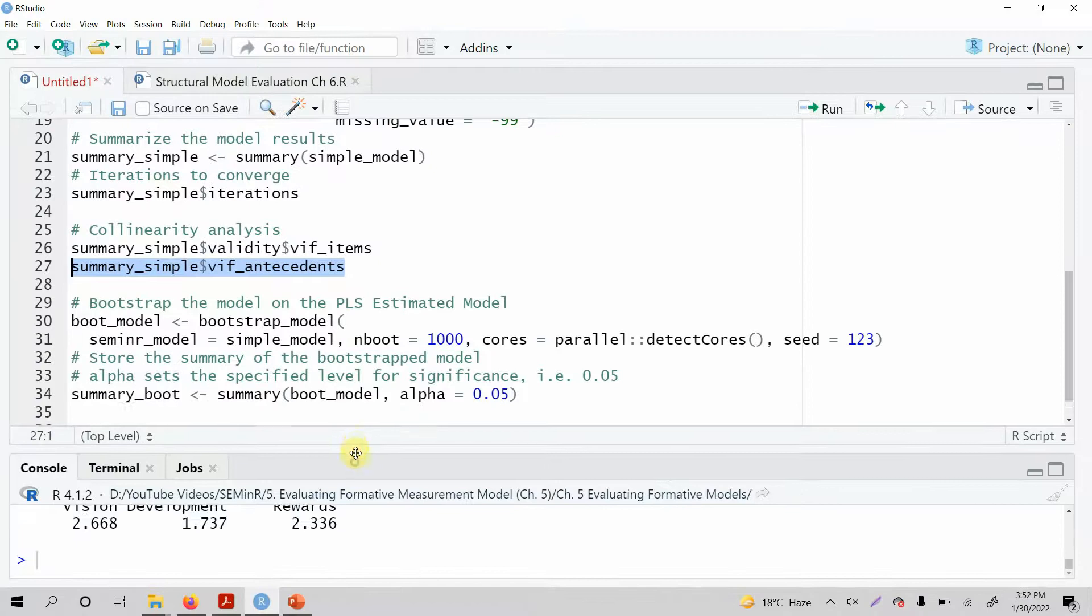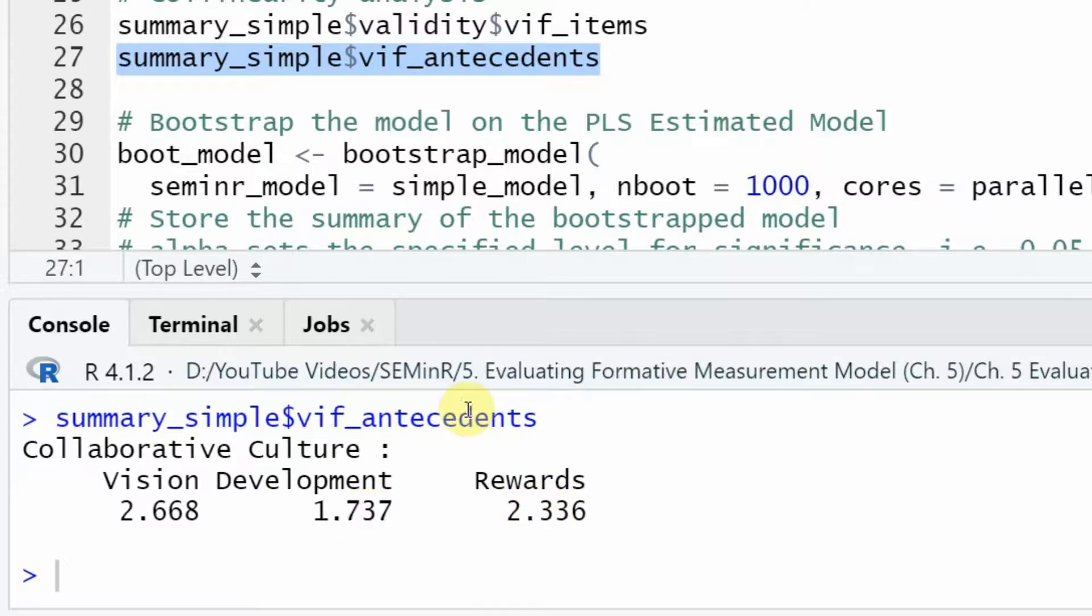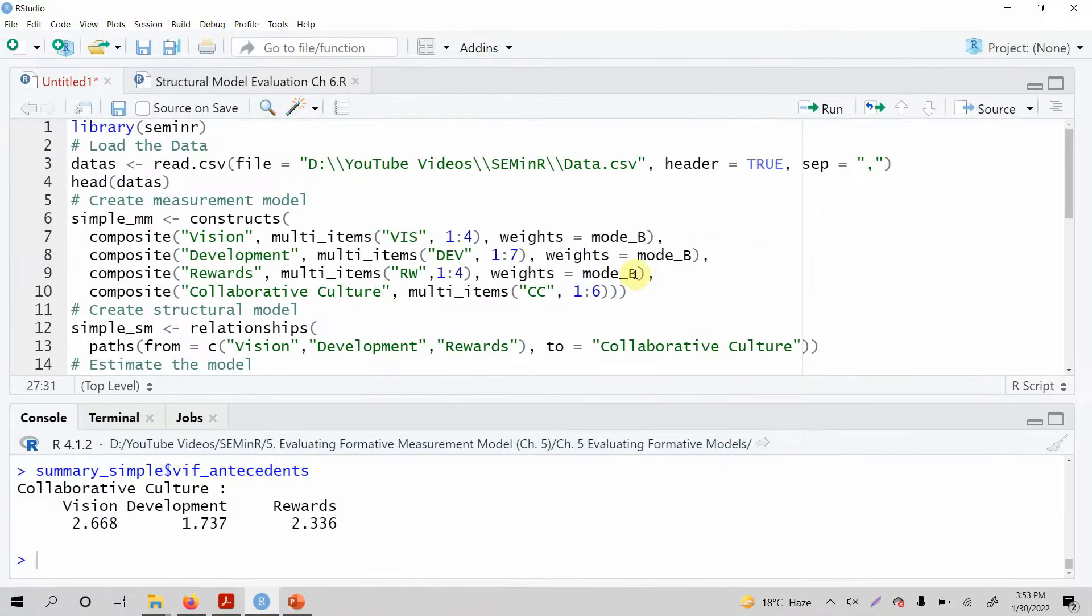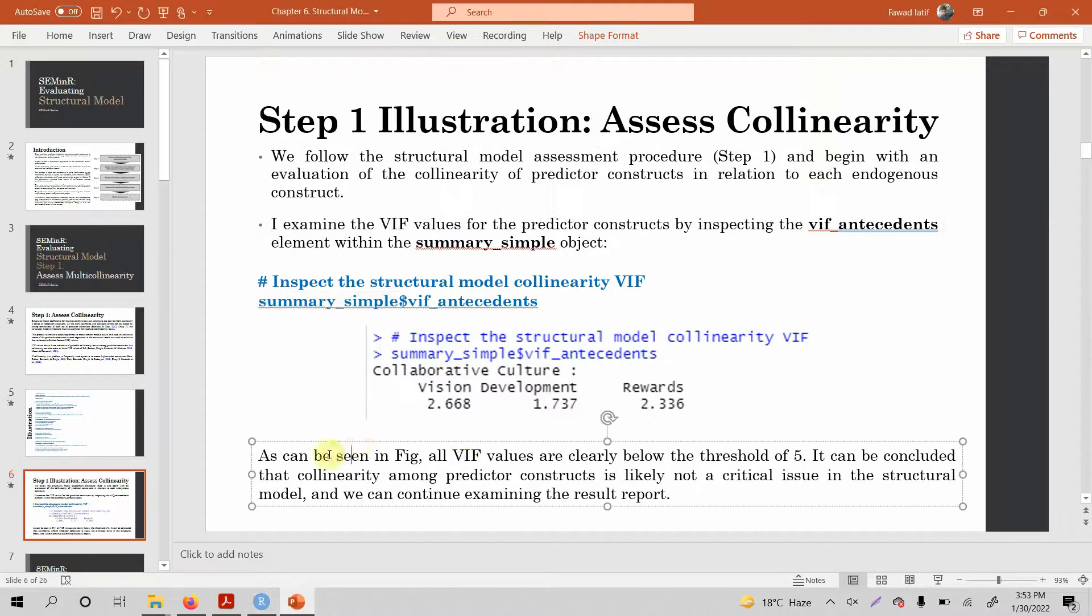And here are your results, look at this, less than three, all of them. So there is no issue of multicollinearity among the antecedents. Now in this case, I'm using the same model as we did earlier. We are going to have complex examples once we finish through the mediation and moderation. As we can see, the VIF values are well below the threshold. So it can be concluded that collinearity among predictor constructs is likely not a critical issue in the structural model. And we can continue to examine the result report.